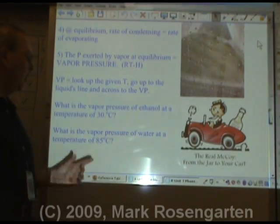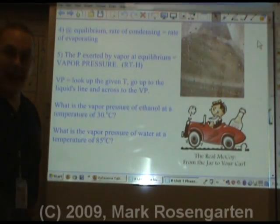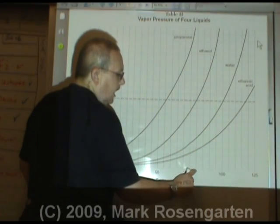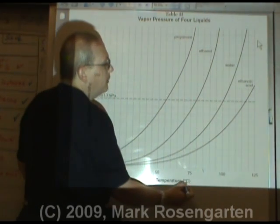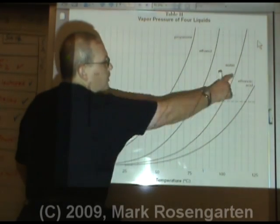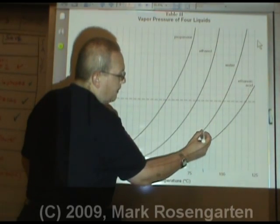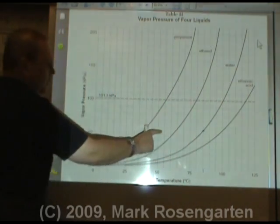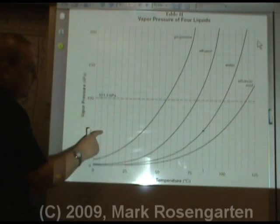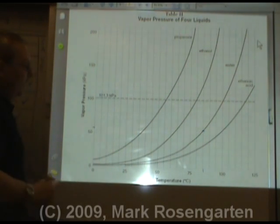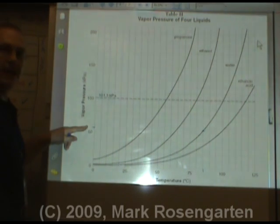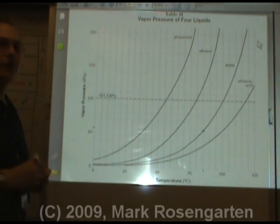What's the vapor pressure of water at a temperature of 85 degrees Celsius? We find 85 on the x-axis, go up to the water line, and shoot across to the y-axis. It looks like about 56 or 57 kilopascals would be our vapor pressure.